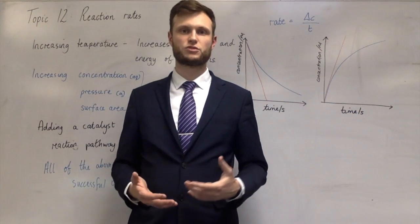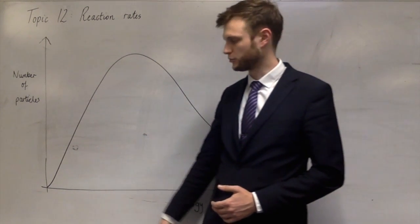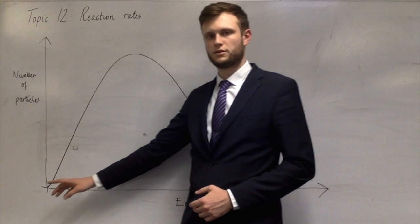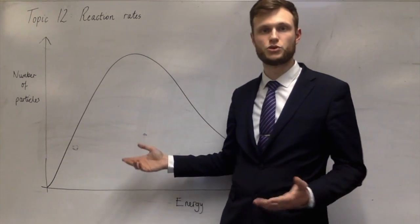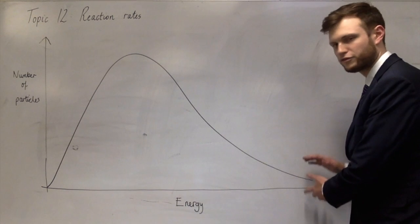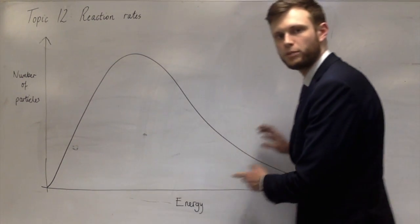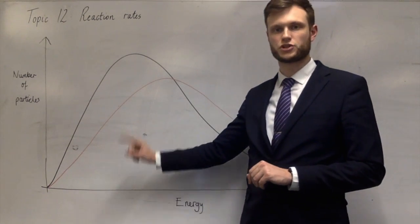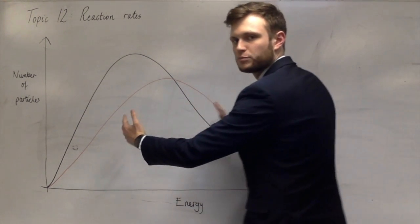The last thing on the specification is the Boltzmann distribution. The Boltzmann distribution shows, for a substance, the number of particles with any given energy. The shape doesn't change: there are always no particles with zero energy, it increases to a peak — which is like the mode average energy — and then decreases but never quite reaches zero; it's asymptotic to zero. There are always a few particles with a lot of energy. Temperature has an effect: at a higher temperature, more particles have a large amount of energy and fewer have a small amount. The red line represents a higher temperature — the shape is spread out and lowered slightly.